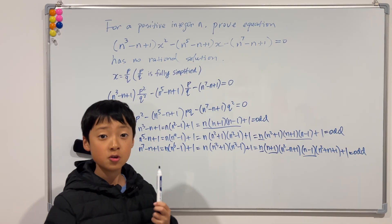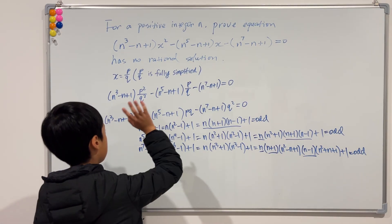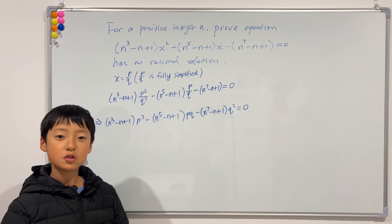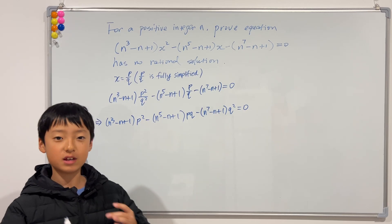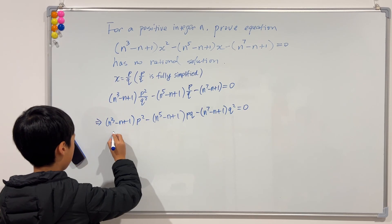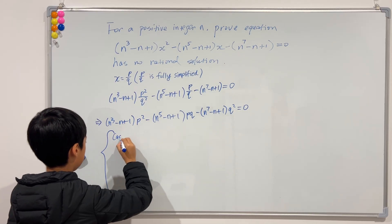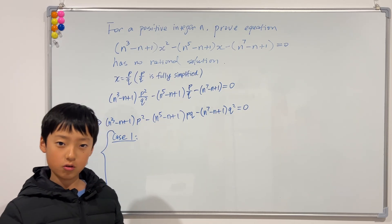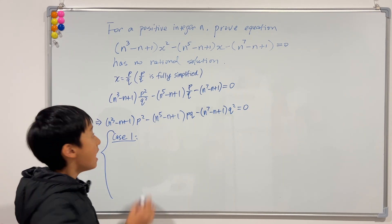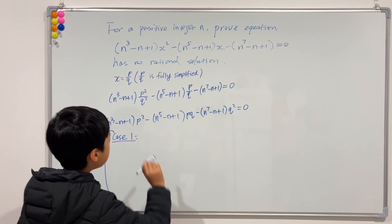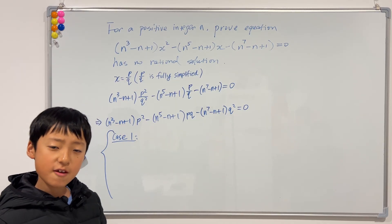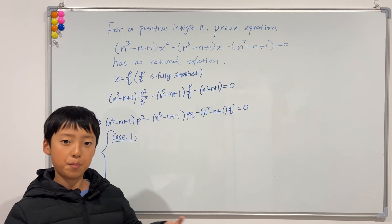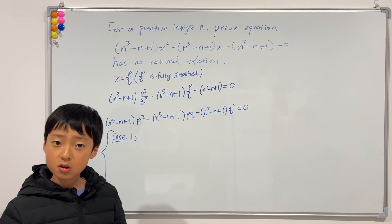This is a huge help in proving that the whole thing contradicts. Now we're going to split this into cases. Case 1: p and q are both even. This is wrong, because we assumed x equals p over q is fully simplified. But if p and q are both even, we could simplify further by dividing top and bottom by at least 2. So that case is not possible.